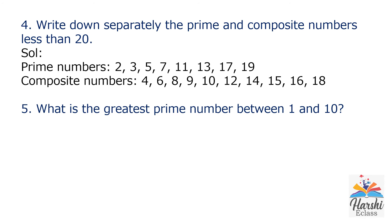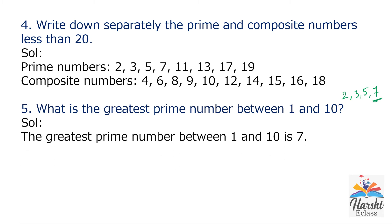Question number 5: What is the greatest prime number between 1 and 10? The prime numbers between 1 and 10 are 2, 3, 5, and 7. The greatest prime number between 1 and 10 is 7.